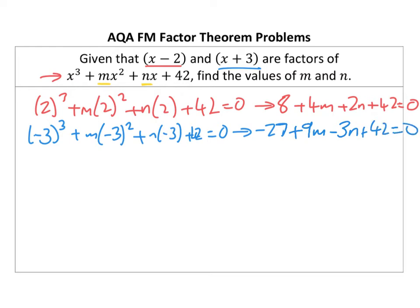So what I now have is, if I simplify all of this, I should have 4M plus 2N equals negative 50. And I should have 9M minus 3N equals negative 15.